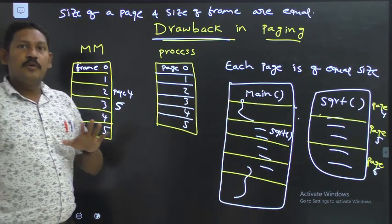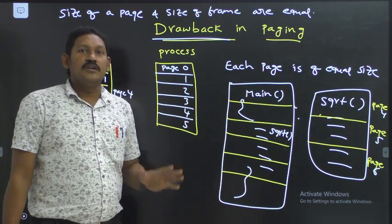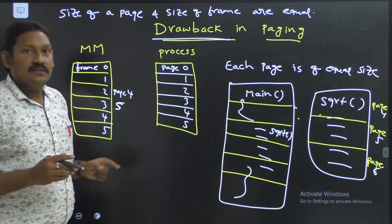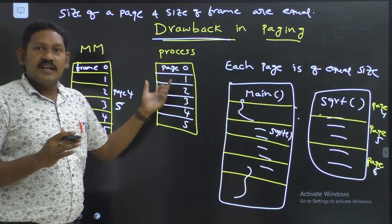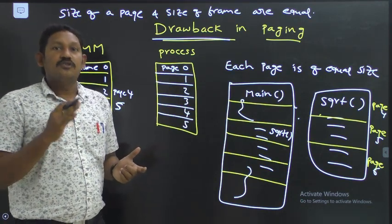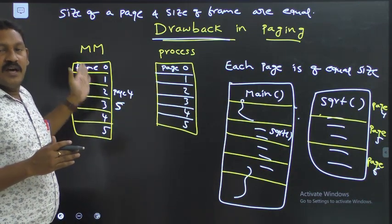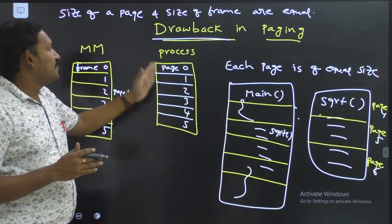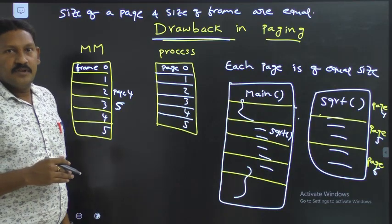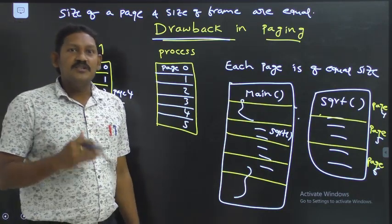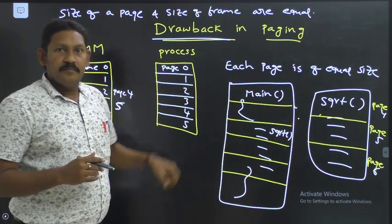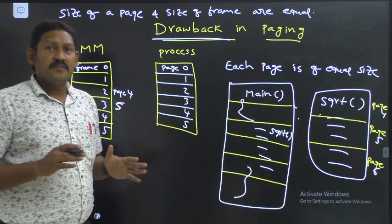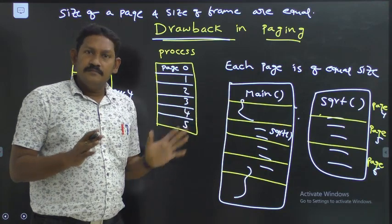In paging, it doesn't bother about the user point of view - it only bothers about memory management. Blindly, it splits the entire process into equal pages, and those pages are placed in frames. In order to overcome that drawback, we use segmentation. In segmentation, what happens is it works with respect to the user point of view. Segmentation is purely for the user point of view.